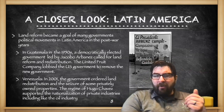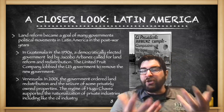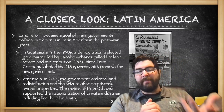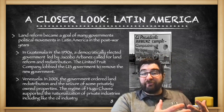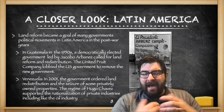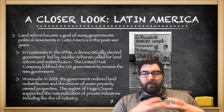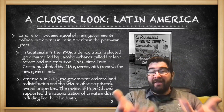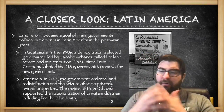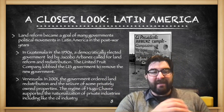In Latin America, land reform became the goal of many countries in the post-war years. In Guatemala in the 1950s, a democratically elected government led by Jacobo Arbenz called for land reform and redistribution. As we discussed last unit regarding the Banana Republics, Western businesses owned much prime real estate and exerted influence over Latin American governments. The United Fruit Company lobbied the U.S. government to remove Arbenz from power, and the U.S. government responded amid concerns about the spread of communism into Latin America.